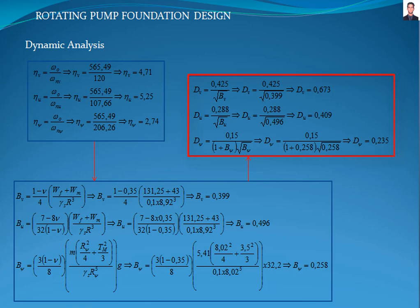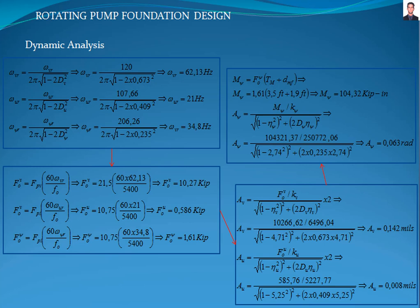The next step is to calculate the resonance frequency for vertical, horizontal and rocking cases with these equations, where omega-VR, omega-UR, and omega-psi-R are the resonant frequencies of vertical, horizontal and rocking, giving results of 62.13, 21, and 34.8 Hz.